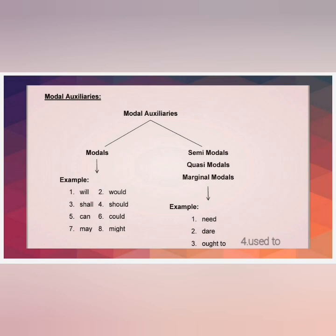Modal auxiliaries are divided into two types: modals and semi-modals. Modals include will, would, shall, should, can, could, may, and might — there are eight modals. Semi-modals are also called quasi-modals or marginal modals. There are four semi-modals: need, dare, ought to, and used to.